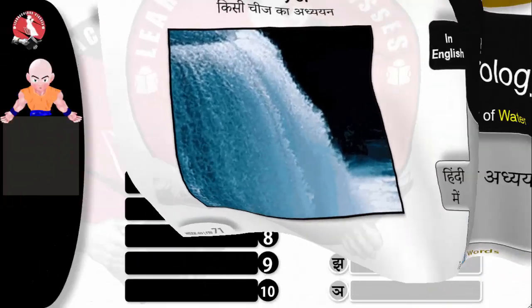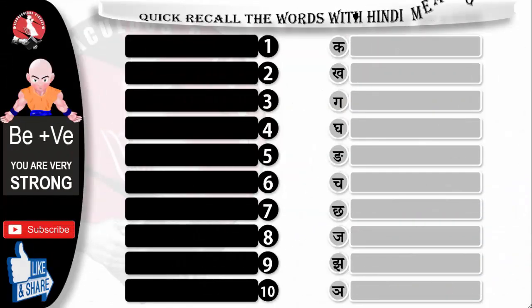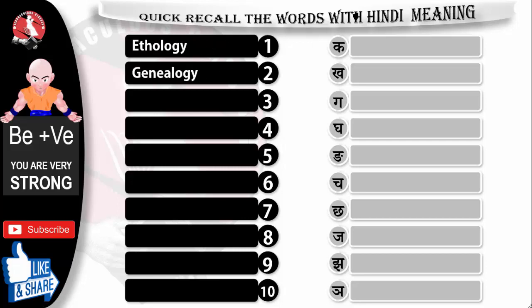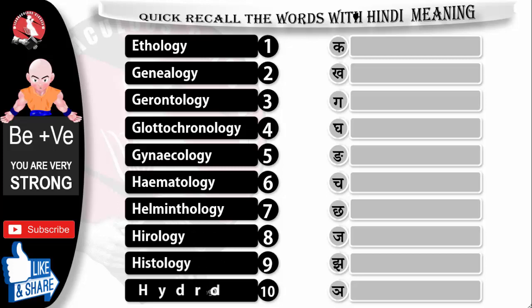Aap chalat exercise kiyor — quick recall the words with Hindi meaning: Ethology, Xenology, Gerontology, Glottochronology, Gynecology, Hematology, Helminthology, Horology, Histology, and last one, Hydrology. In words ko unke Hindi meaning ke saath dekhenge.